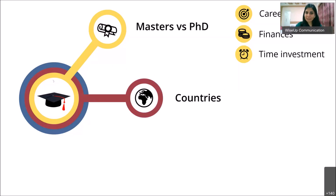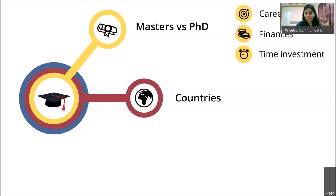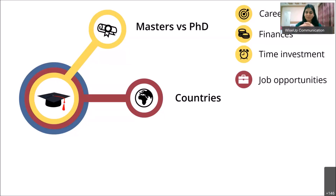Once you've decided on masters or PhD, the next thing is to choose countries. Different countries offer different climates for study. The first thing to consider is job opportunities. Most of you are interested in working abroad, and different countries offer different kinds of opportunities. For example, the US is known for Silicon Valley, so if you study computer science or electronics engineering, the chances of getting a job are quite high.